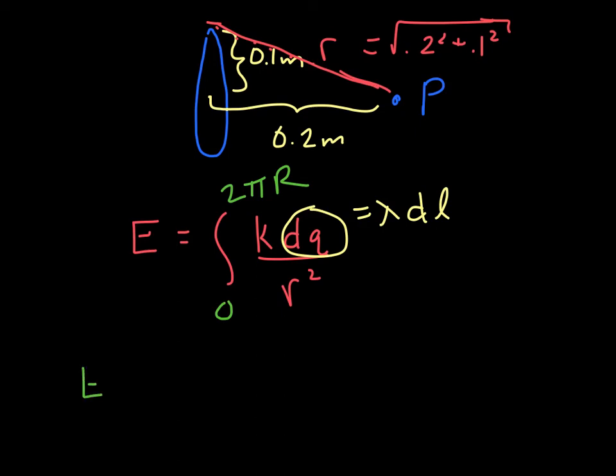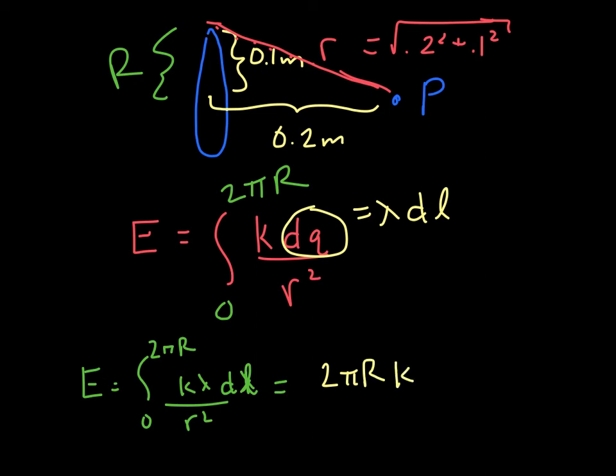So we now have E equals integral from 0 to 2 pi R - and big R I'm using for this radius, that's big R - k lambda over r squared dl, which equals 2 pi R k lambda over r squared. And if you plug this in, you get 3.04 times 10 to the fifth newtons per coulomb.